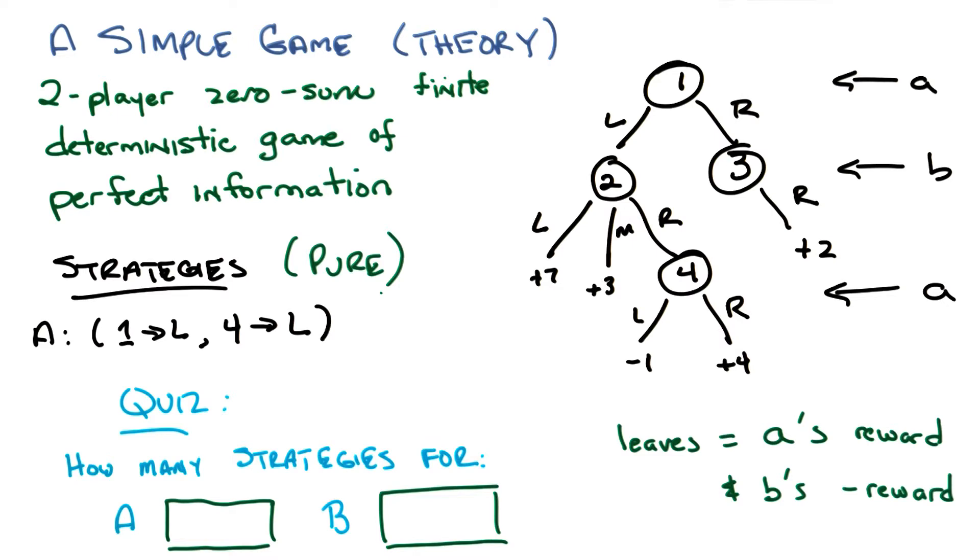So, you had said in state one, it can go either left or right, and in state four, it can go either left or right. So, boy, that sounds a lot like two times two equals four. Yes, that's exactly right.